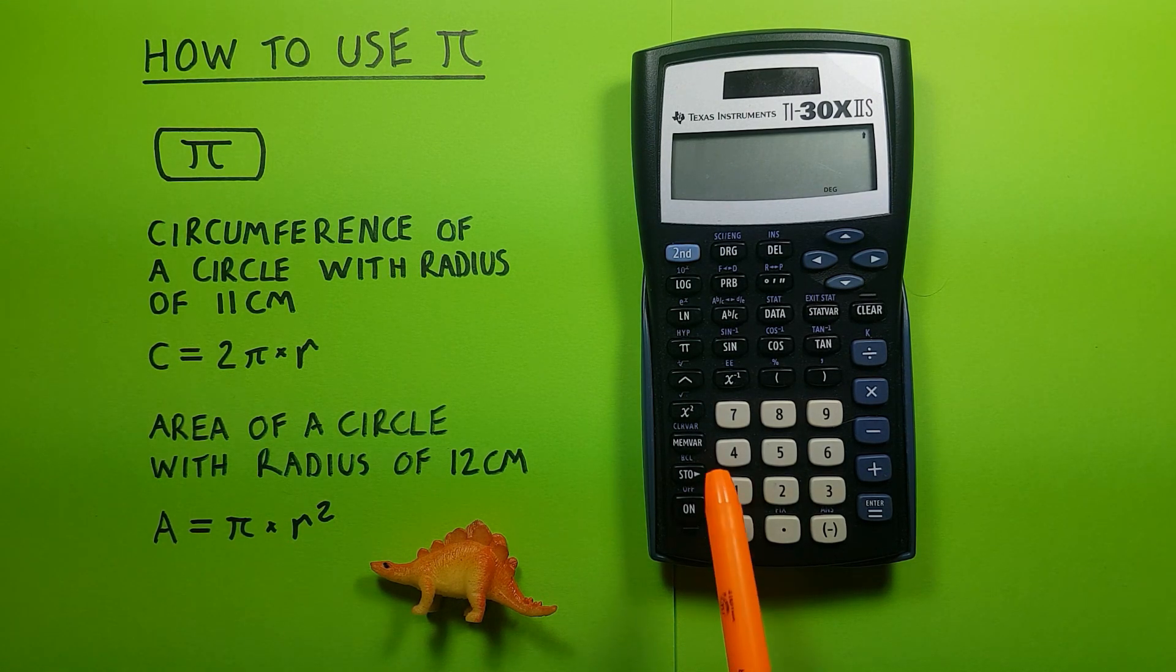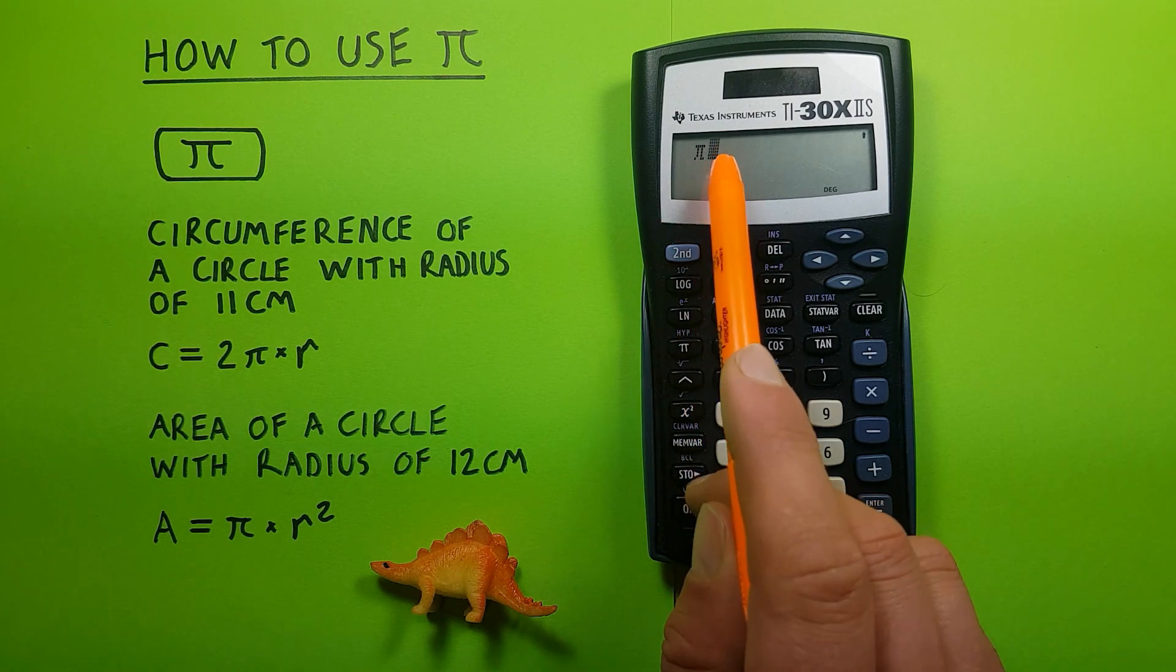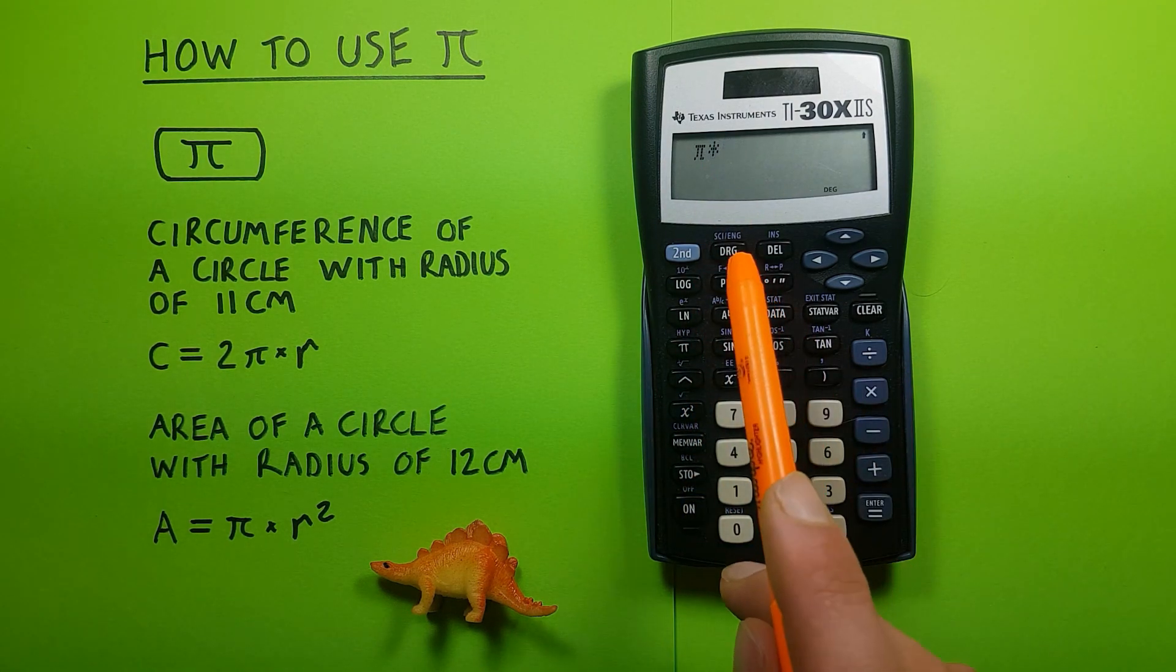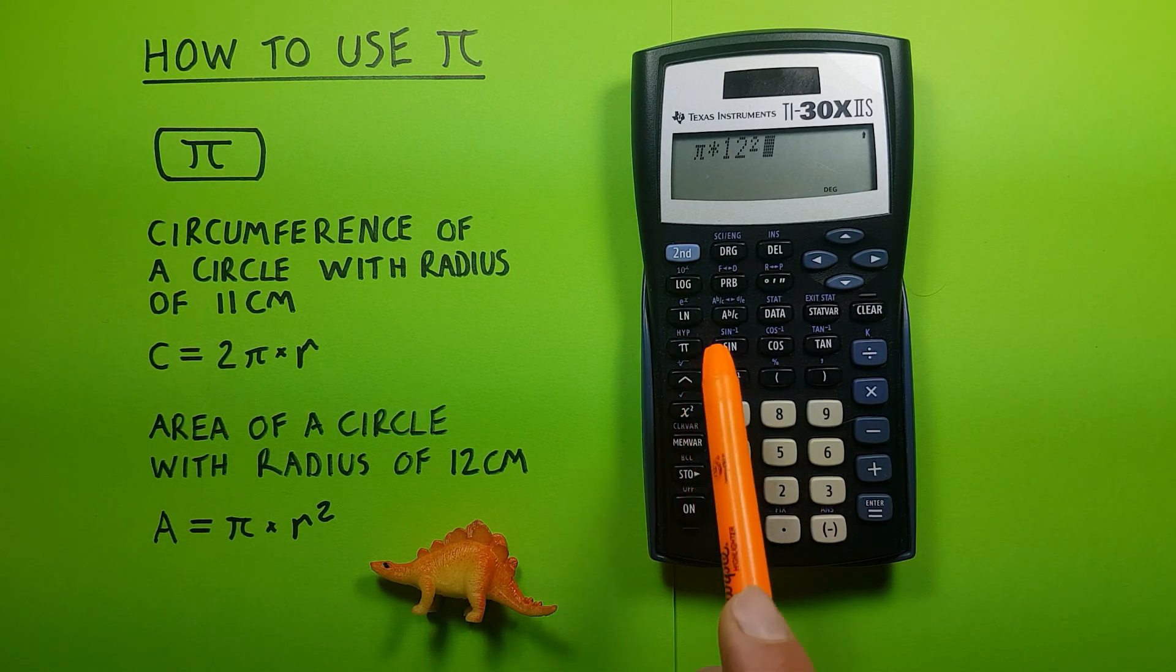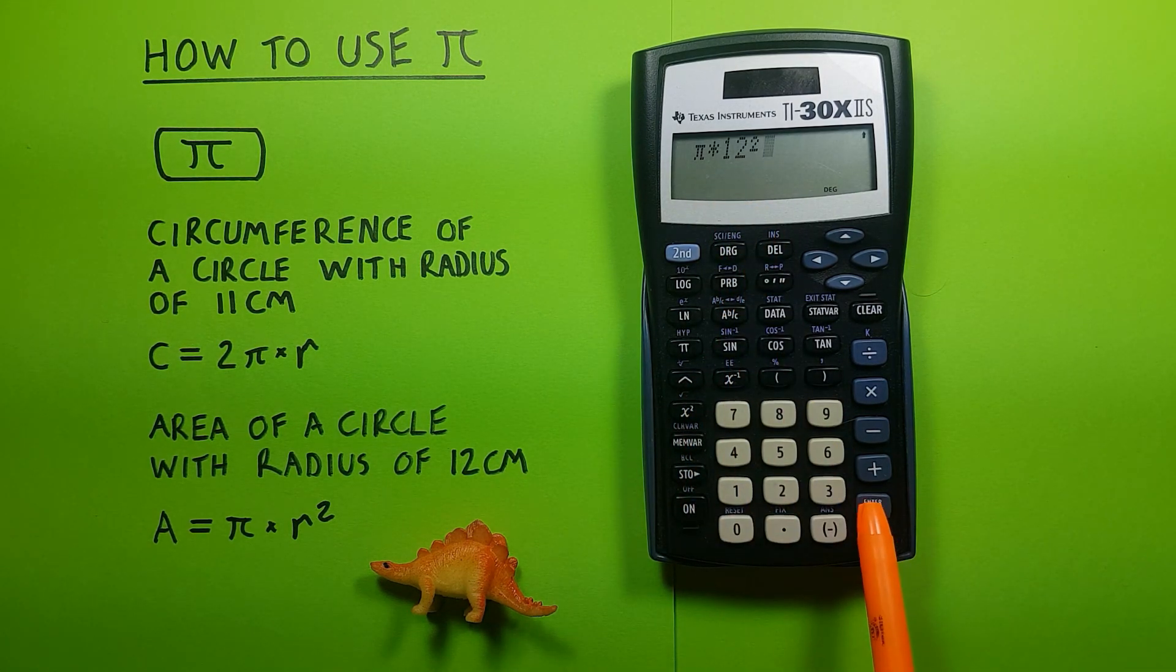Which again we can enter with the Pi key there, times our radius, which was 12. Square it, and press enter. And we see we get 452.389 etc.